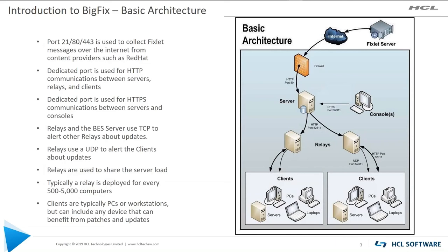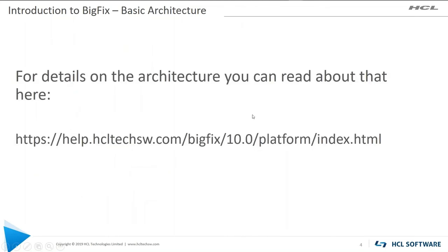Continuing on with the architecture, there are some ports we need to use. Port 2180 and 443 are used to gather content outside of BigFix. BigFix itself uses port 52311 — all communication inside BigFix is over that port. Communication between a BigFix server and a relay is all TCP; however, when going from a relay out to a client, alerts that something new has happened are sent via UDP. Make sure your firewalls allow both TCP and UDP across port 52311. If you need more information on BigFix architecture, you can go to the URL shown and read all about it.